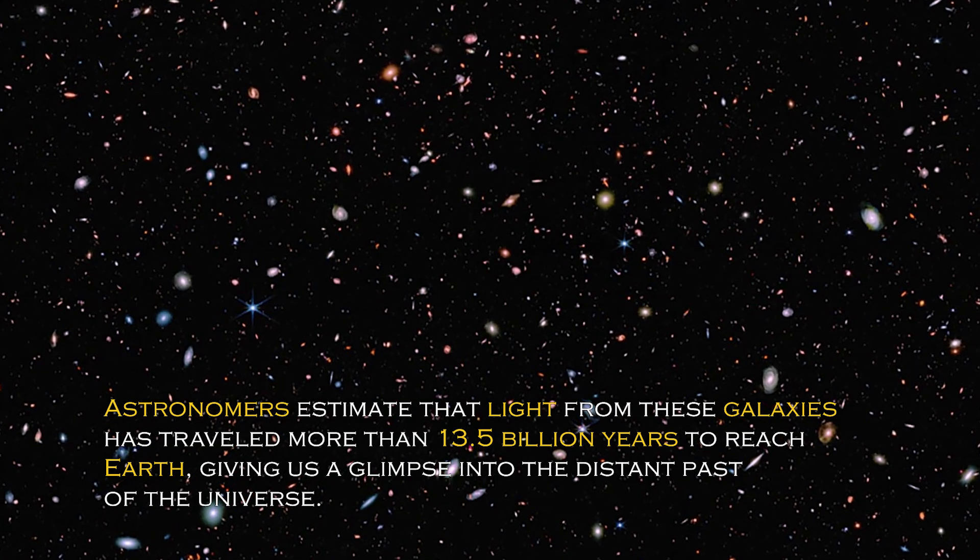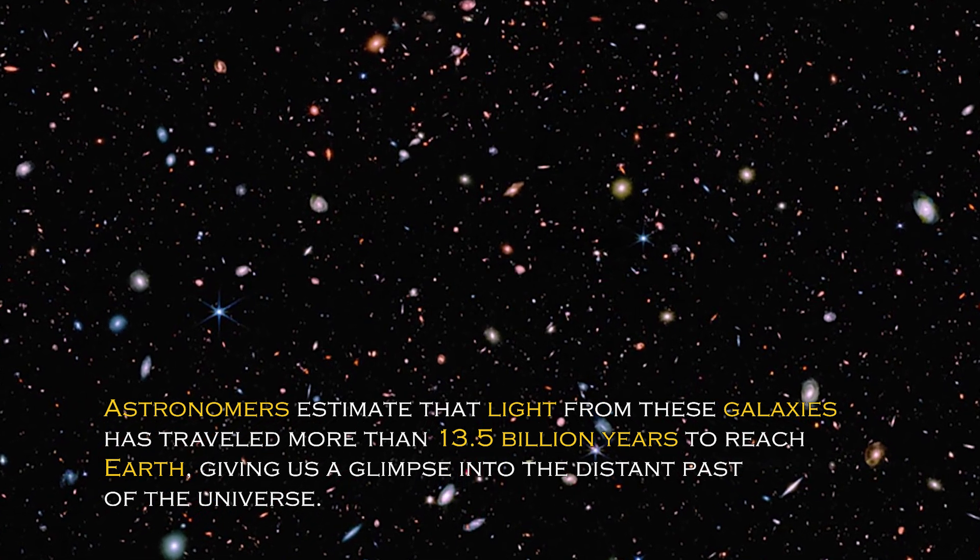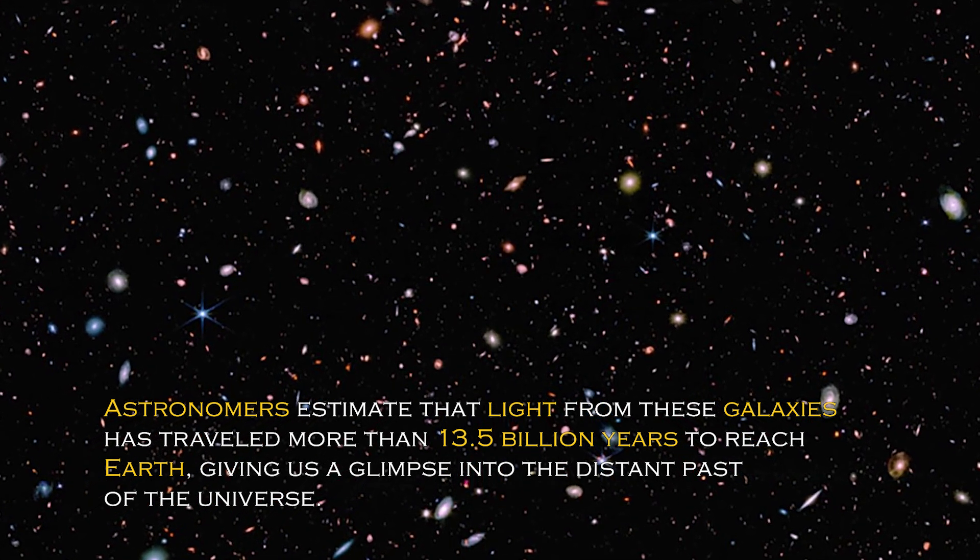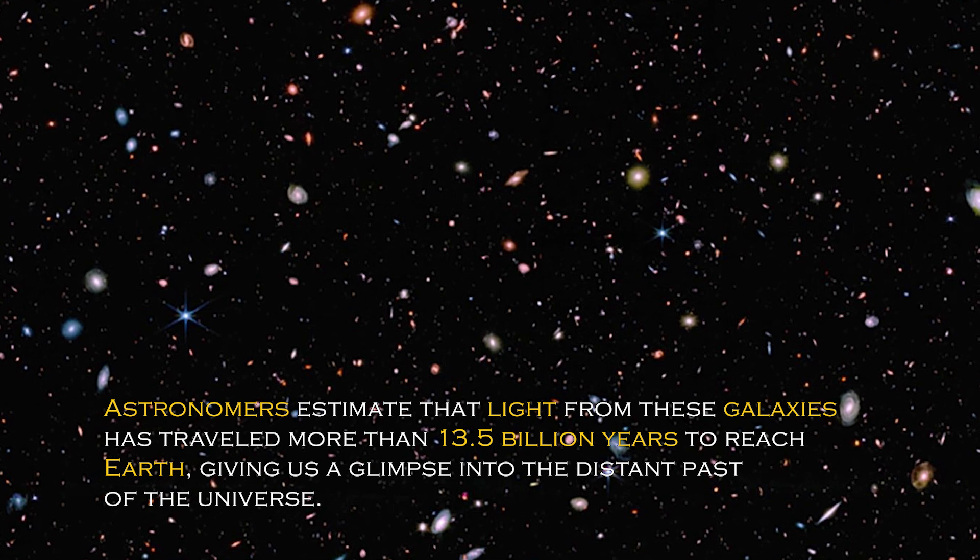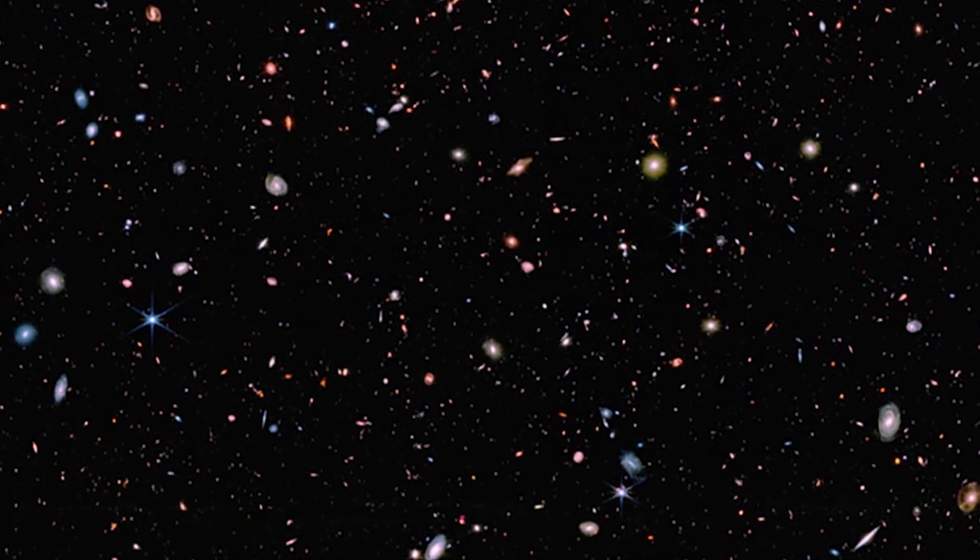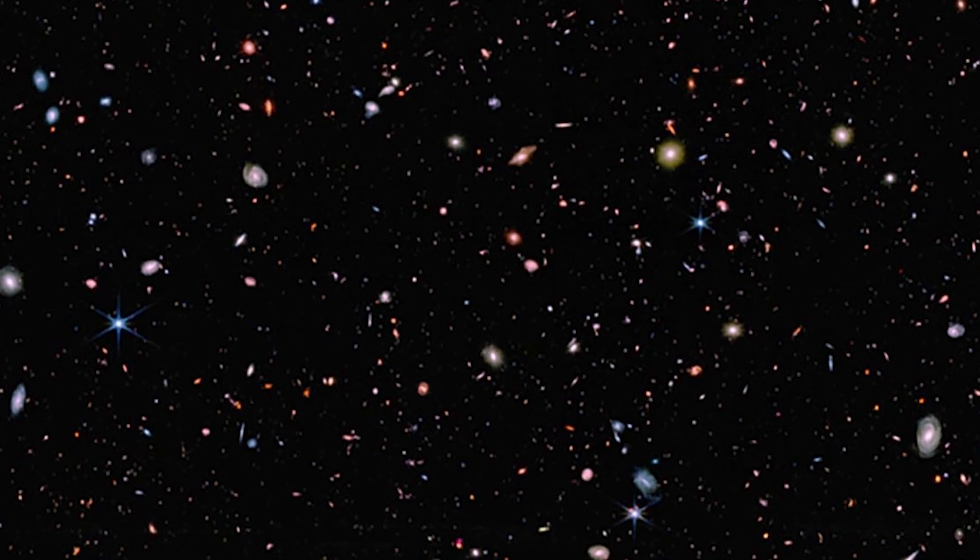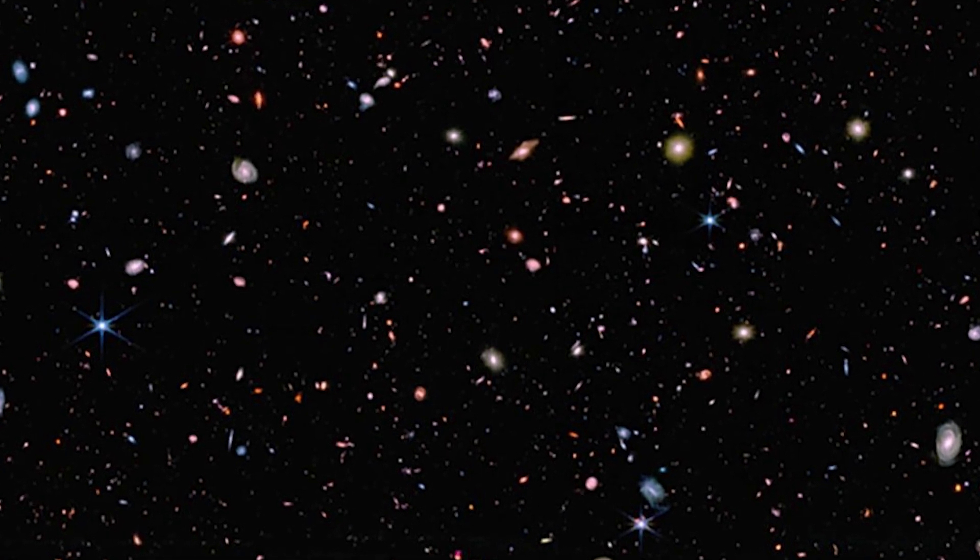Astronomers estimate that light from these galaxies has traveled more than 13.5 billion years to reach Earth, giving us a glimpse into the distant past of the universe. These galaxies were discovered when the universe was young, which sheds light on how quickly the first generations of galaxies emerged.